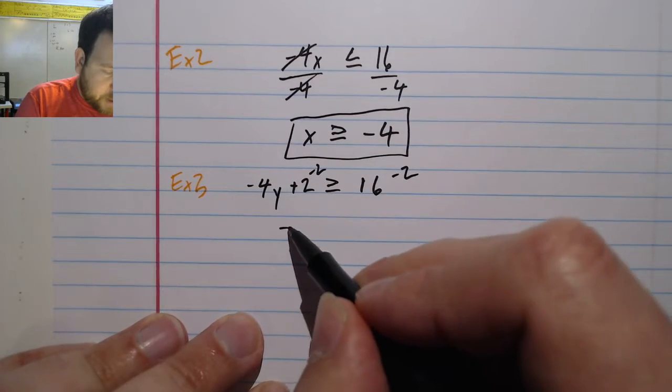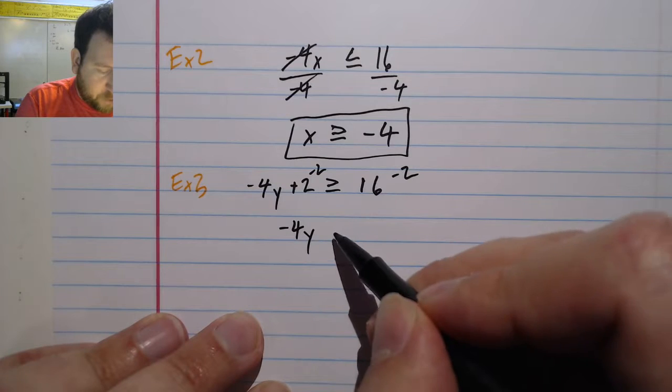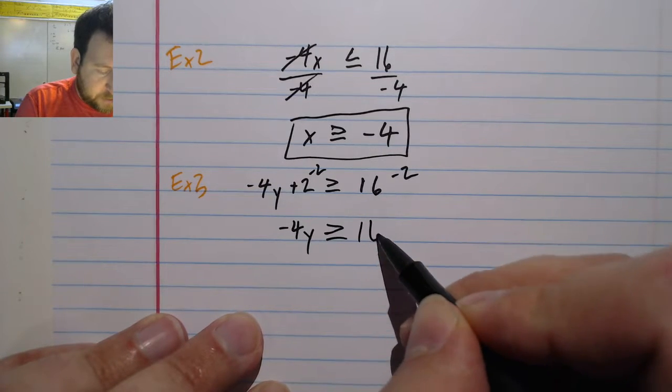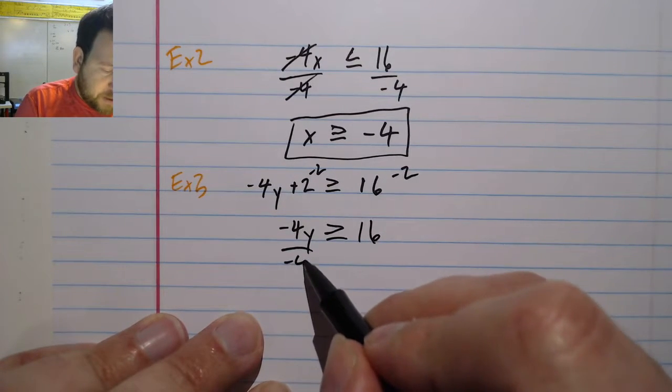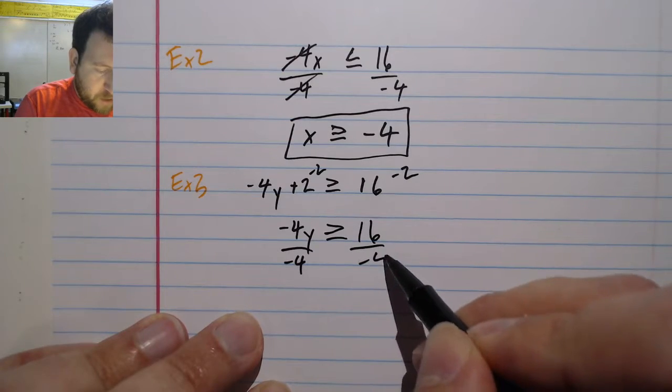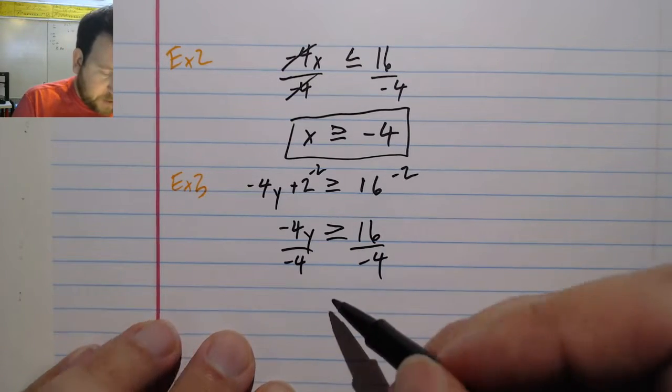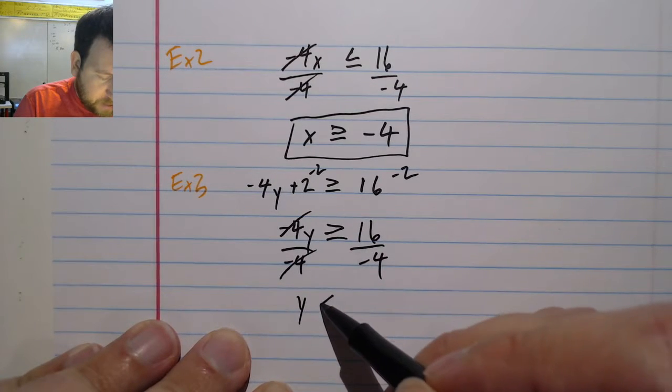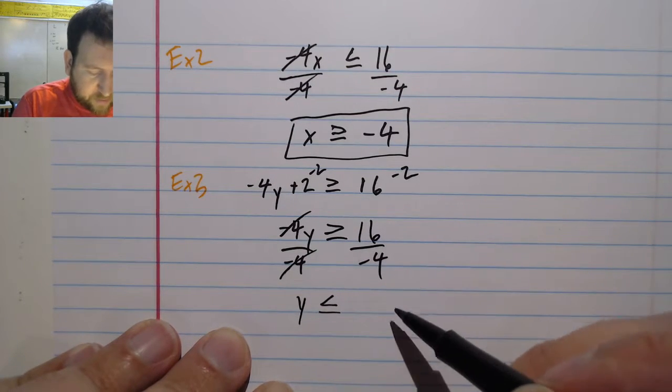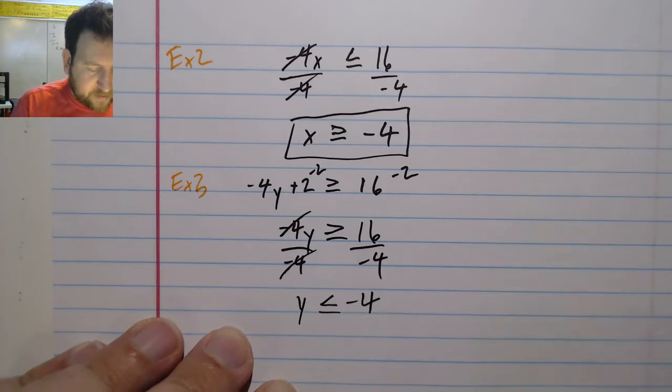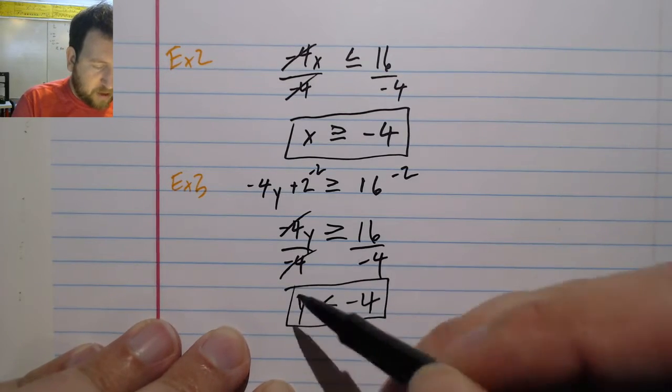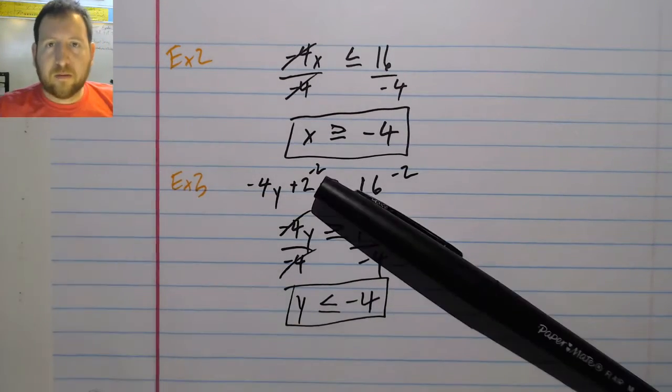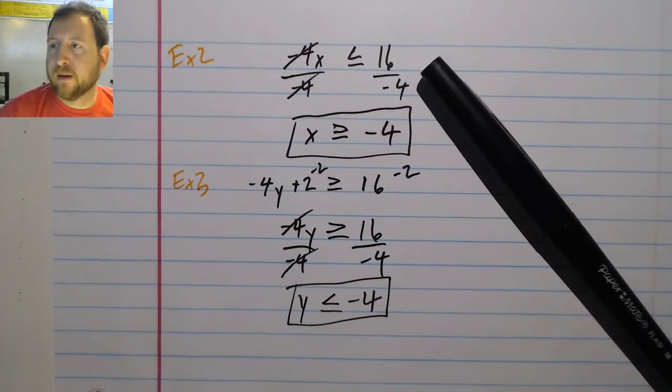Those are gone and I have negative 4y is greater than or equal to 16. Divide both sides by negative 4. When I do that, the inequality flips. So I have y, because these are gone, is less than or equal to 16 over 4 is 4, and it's negative because one of them is negative. There you go, hopefully that makes sense and good luck.